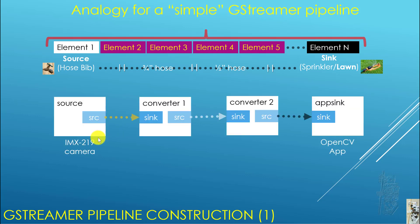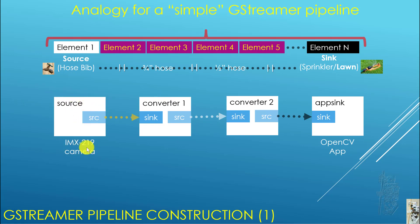If you look at the GStreamer documentation, they usually use a flow chart where each item is called an element. We have a source element, which is the IMX219 camera on the Jetson Nano or RPi. Then you have the sink, which is whatever OpenCV C++ app we're working on — that's the app sink. You can also have a display sink, a file sink, an image file, or a video file. The source is the camera.